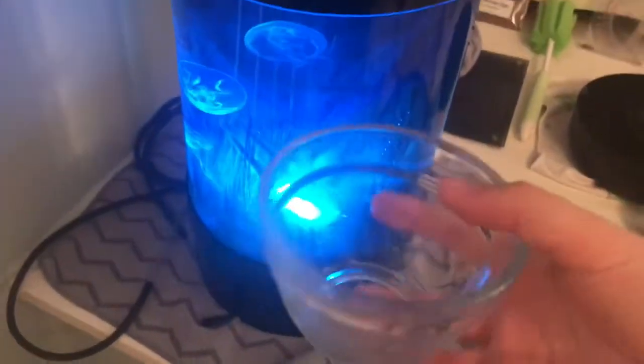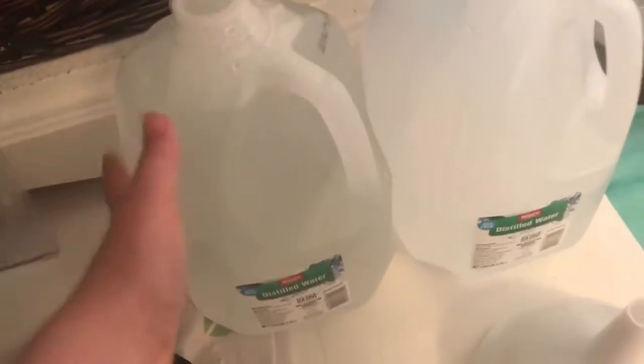And carefully scoop your jellies out of your tank and put them into a separate container. This container should be filled with some pre-mixed water. This is my distilled water, but I pre-mixed it with jelly salt.